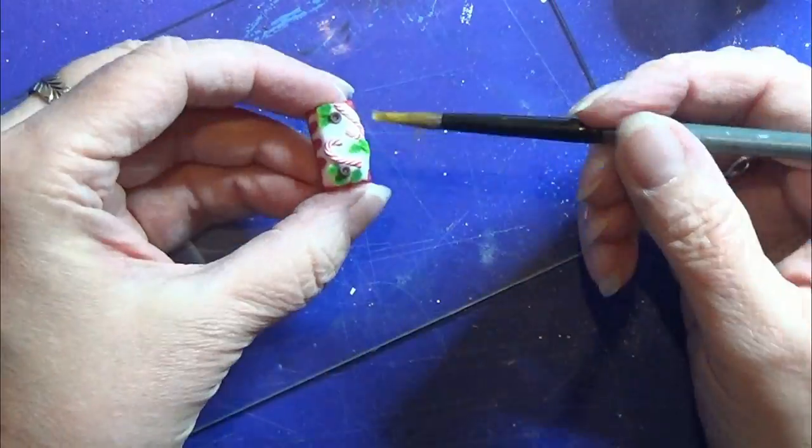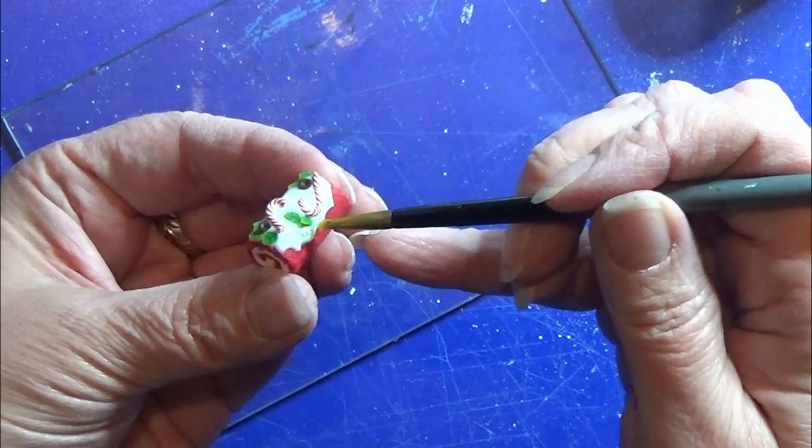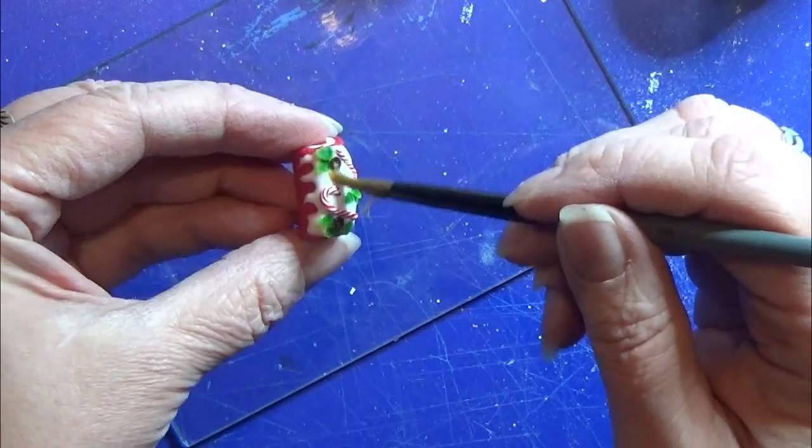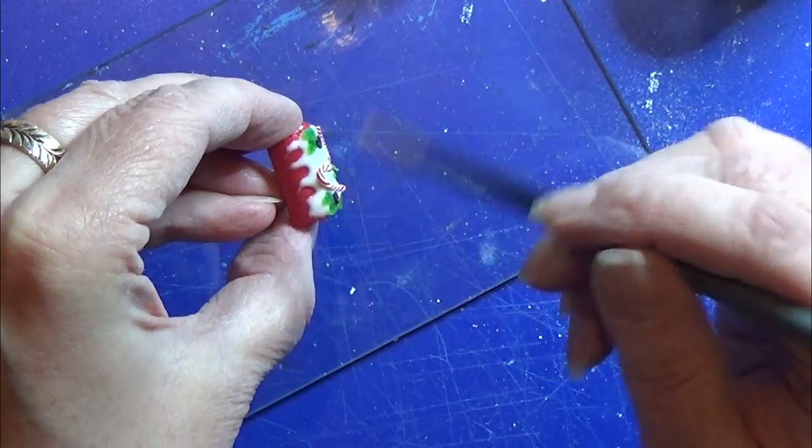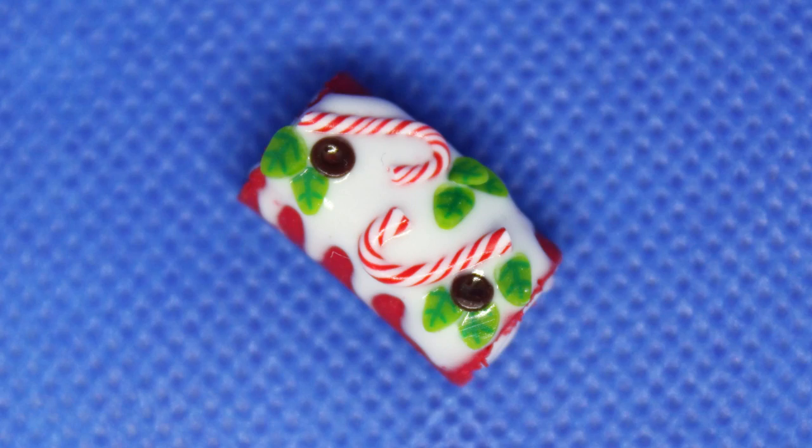When the cake has cooled down, I'm using some Fimo glaze and glazing the decorations and the icing, not the red part but everything else. That's all there is for this little cake. Thank you for watching, please give my video a like if you liked it. Happy crafting!